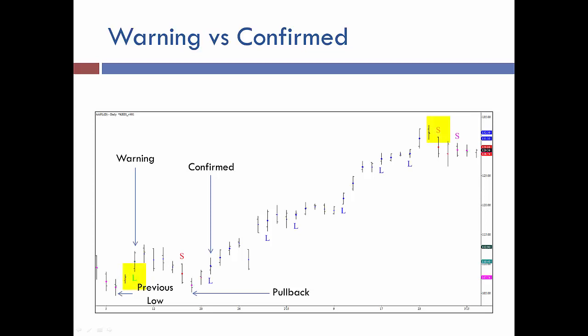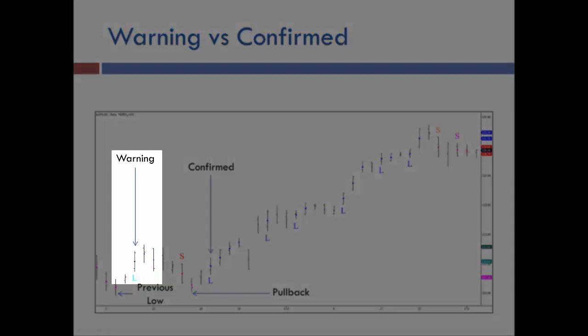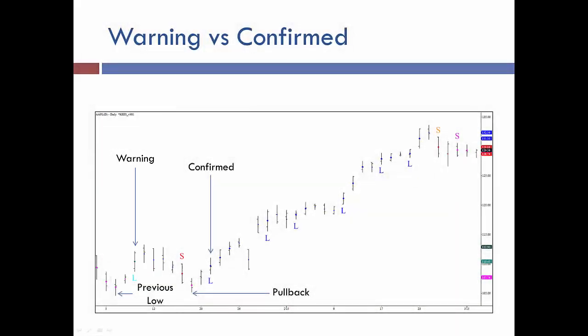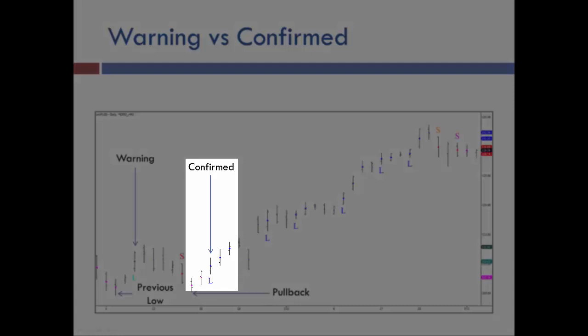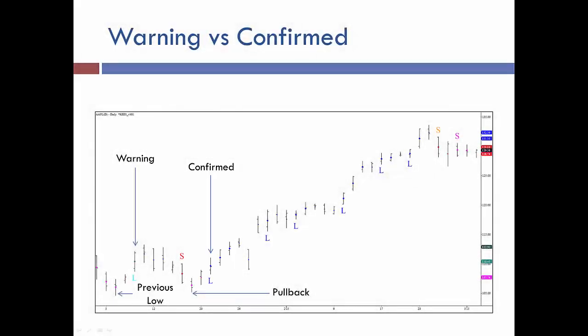The L's and S's will be either a light blue or an orange color. The light blue L's are warning long signals — the first signal in a potential trend. As the market comes down out of a declining move and starts to rise, it generates a warning signal. If the trader wants to be aggressive, they can get long at that point. However, if they want to be more conservative, they wait for a pullback that holds the previous low. Then, when the confirmed first class long signal appears — the darker blue L — that's where the trader would enter long.